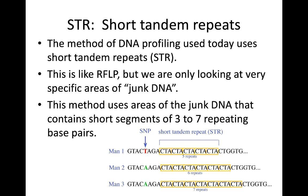For instance, here's one short tandem repeat where they're specifically looking for the CTA repeating base pair. Here you see they have a CTA but it's not repeated — it's just by itself. Here we have a repeated sequence of CTA five times — CTA, CTA, CTA, CTA, CTA — five short repeated sequences that are in tandem. That would be a five-repeat STR. A second person in the same section of junk DNA has CTA repeated six times, and a third person has it seven times.